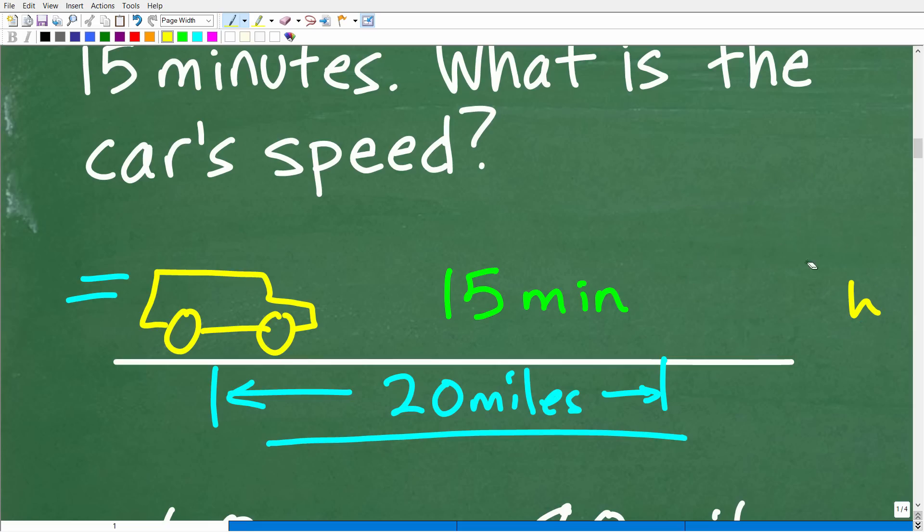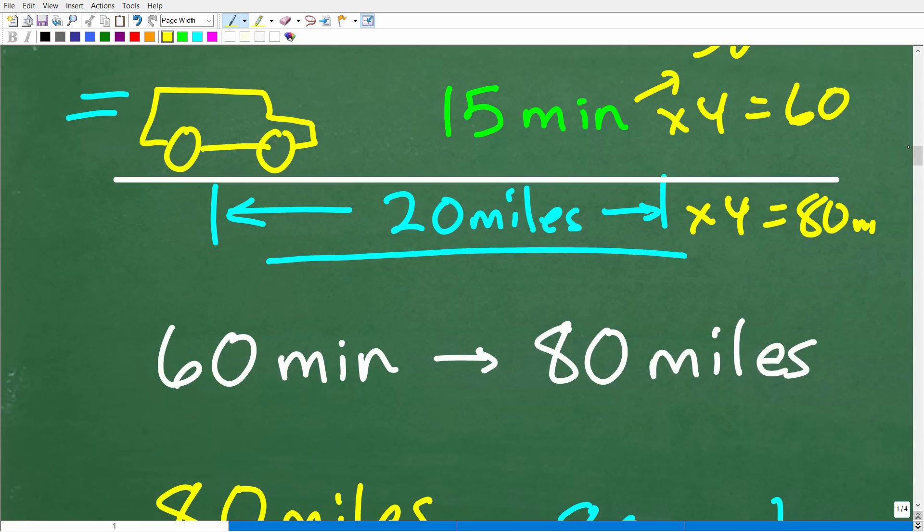So here, we are dealing with 15 minutes. Hopefully, some of you are saying, well, 15 minutes - if this car went 20 miles in 15 minutes, how much would it go in 30 minutes? Well, we just doubled this, right? It would go 40 miles. Well, then, if we just multiply this by four, we're going to get to 60 minutes, which is one hour. So I multiply this by four, that's 80 miles.